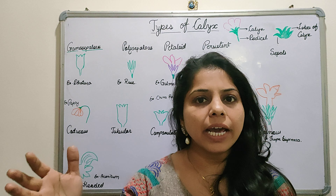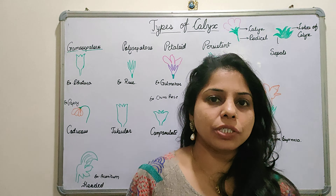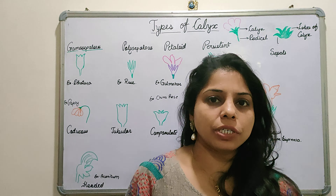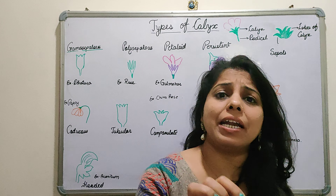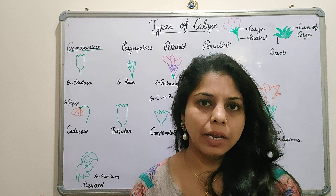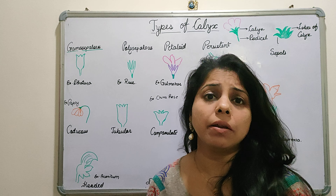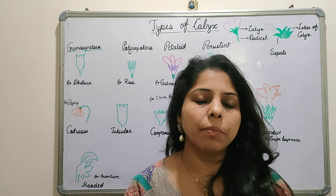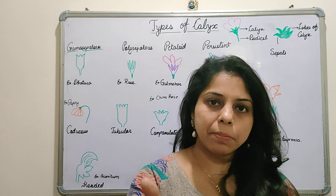With time, either after fertilization or before fertilization in some cases, the perianth will shed off — it will wither off. That is why they are not that important and do not take part directly in reproduction. So they are called perianth. I have also covered this term in the previous lectures on the flower.